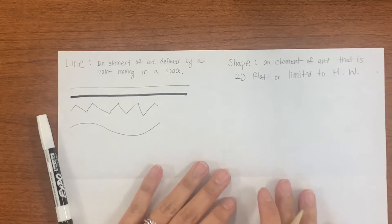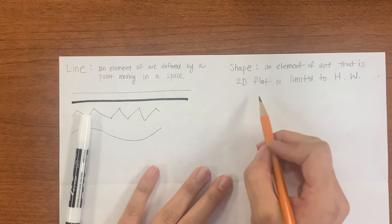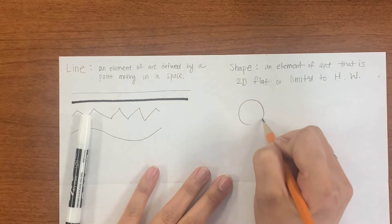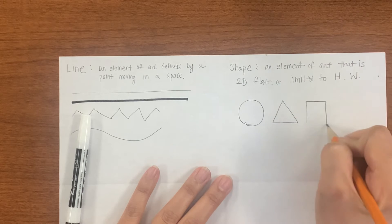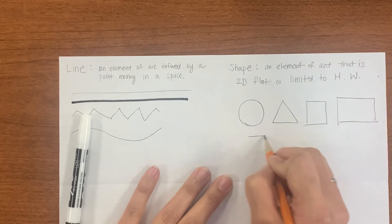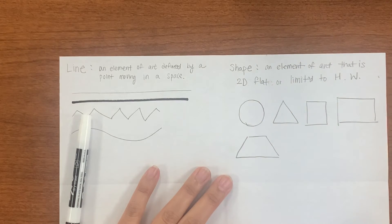So it could be enclosed shape. It could be open shape. Usually it's an enclosed one. We can have a circle, triangle, square, rectangle, trapezoid, right? All different types of shapes. I want you to go ahead and see if you can do that.